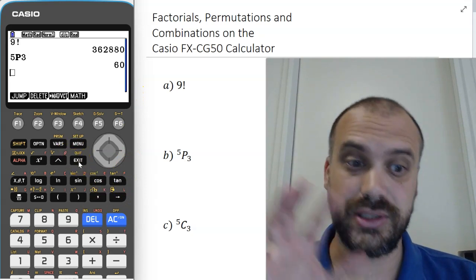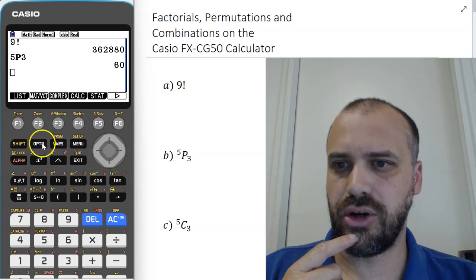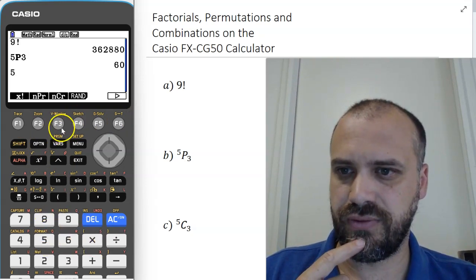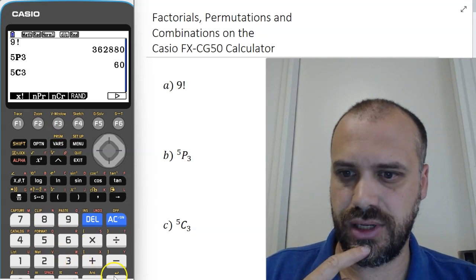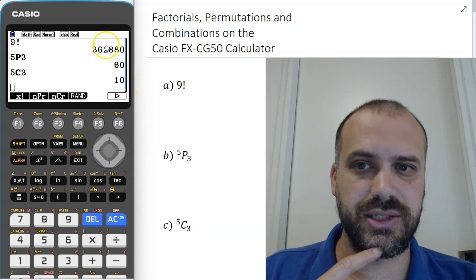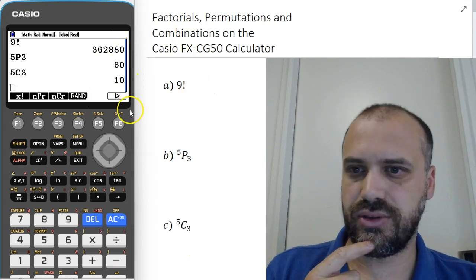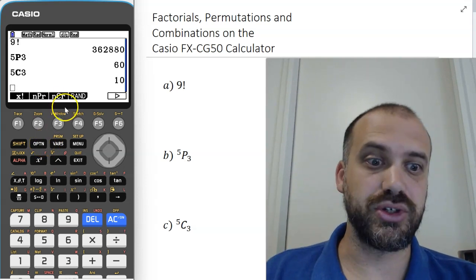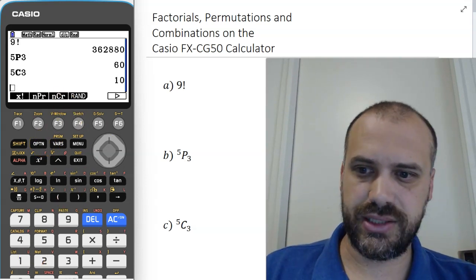to exit again just so you can see the process. Option, arrow across to probability, and we're going to go 5C3. And there's our answer. So three questions, three answers. It's always option, arrow across to probability, and then do what you need to do. Alright, that's it.